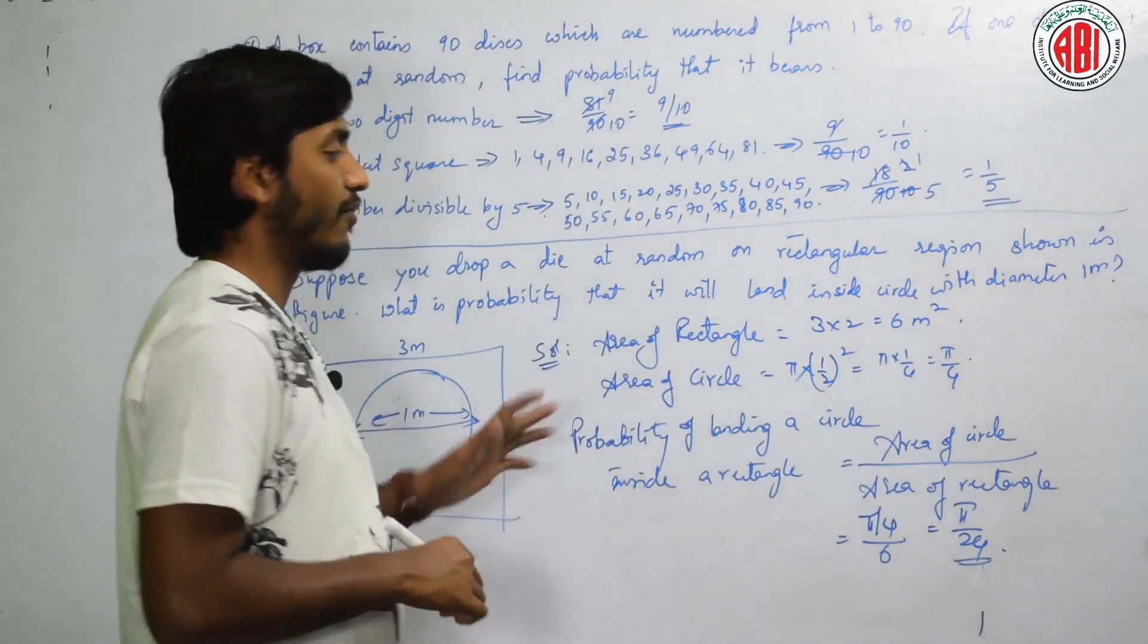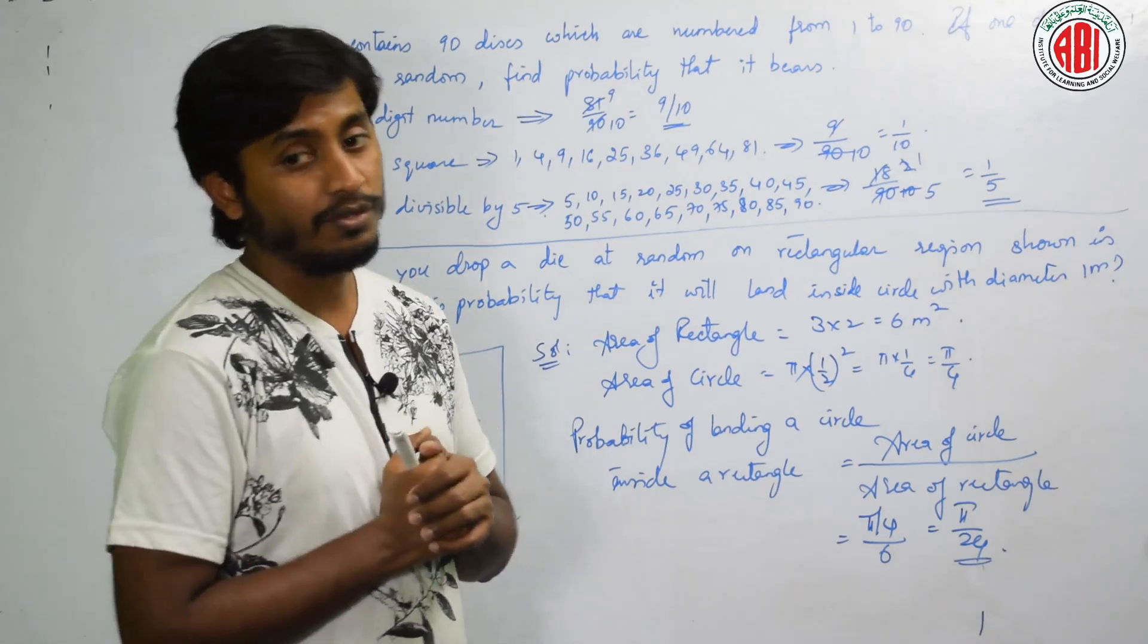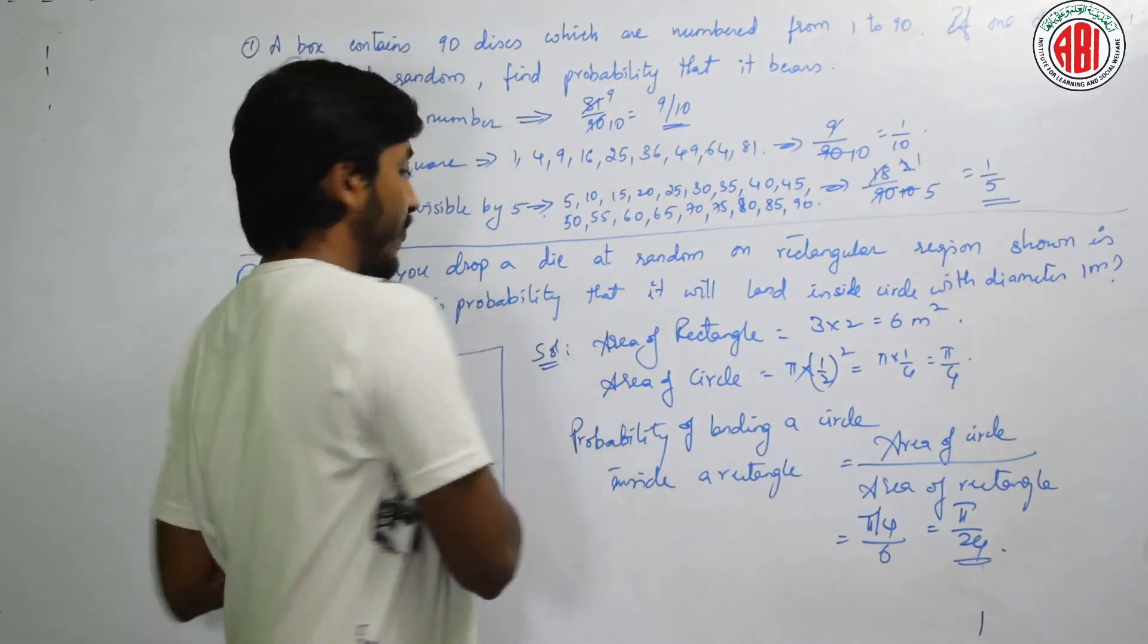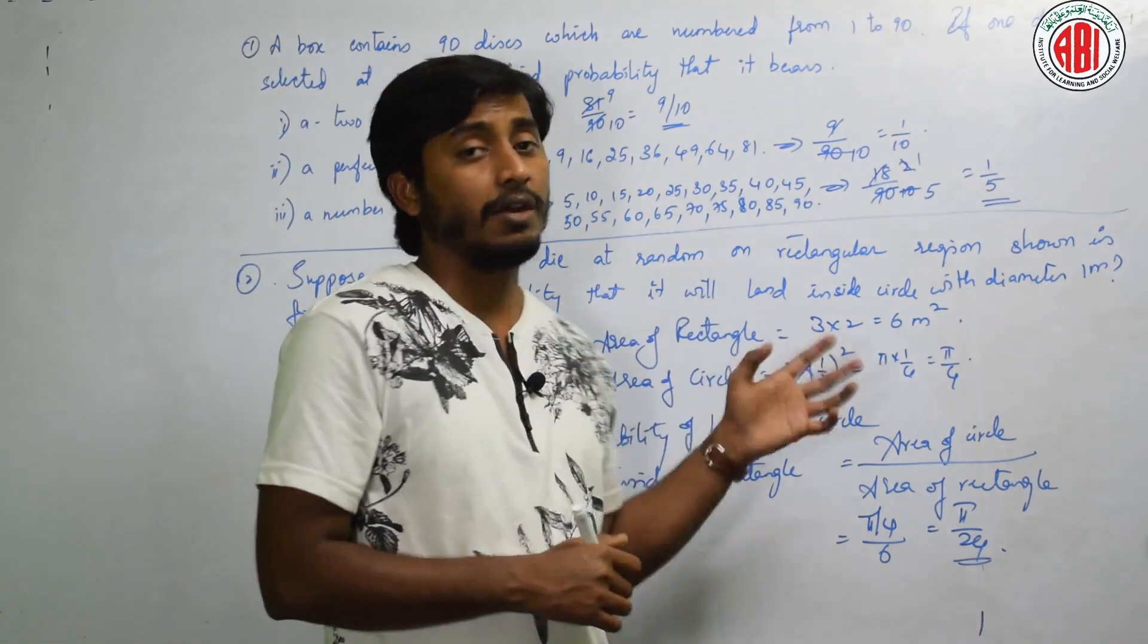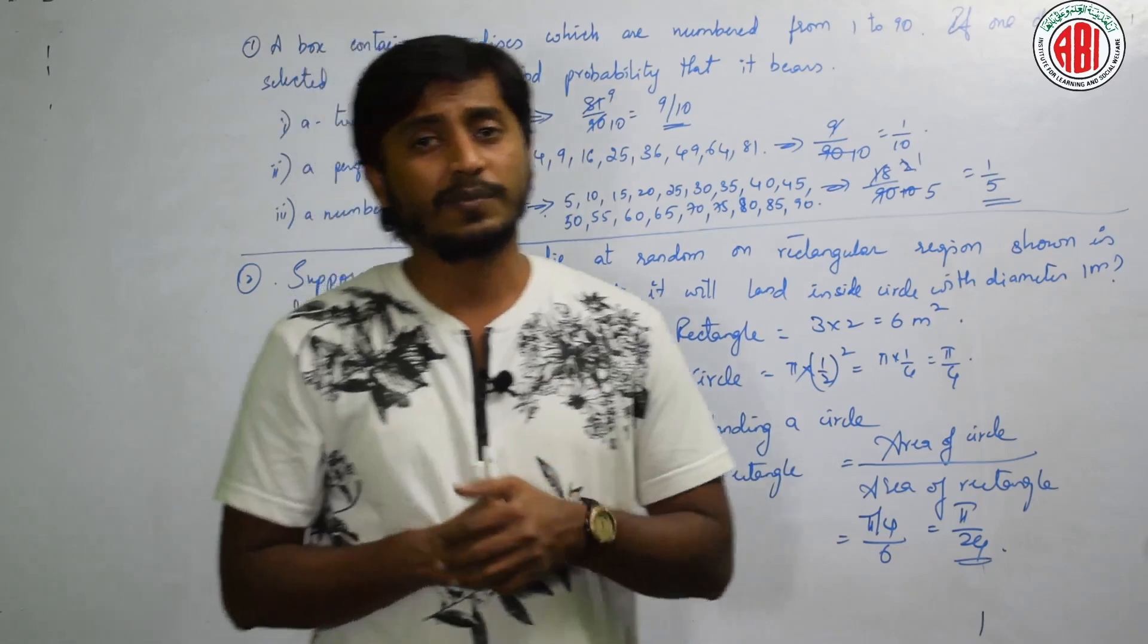Do you understand? What is that I have to know in this question? I have to know what is the area of a square and area of a circle. And we have to understand how to solve it. Tell me what are the next problems? Let us do.